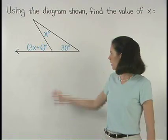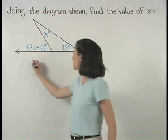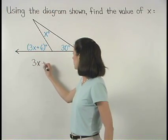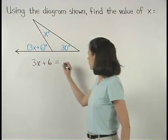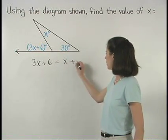So in the diagram shown, the exterior angle, 3x plus 6, equals the sum of the remote interior angles, x plus 30.